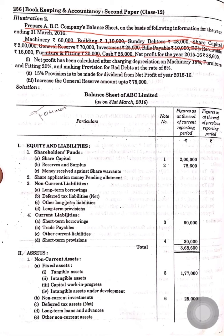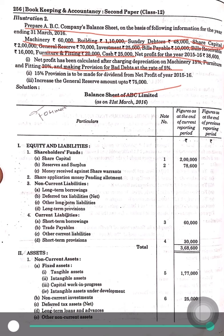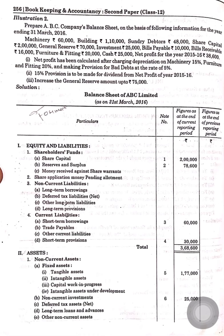Net profit for the year goes under reserve and surplus. Profit has been calculated after charging depreciation at 15% on machinery and furniture, provision for bad debts, 15% provision for dividend — dividend will be shown in reserve and surplus — and increase in general reserve, which will also be shown in reserve and surplus. Now let's see the notes to accounts first.